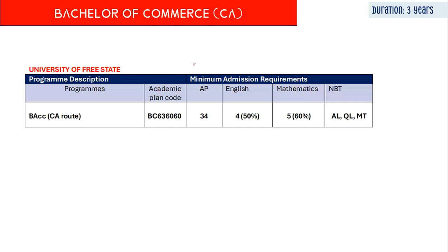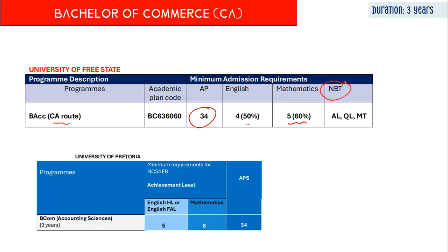The requirements for the CA route are slightly higher. At the University of the Free State, you need a code 5 for mathematics, an AP score of 34, a code 4 for English, and you'll need to write all your NBT tests. At the University of Pretoria, you do not need to write the NBT tests, but the maths requirements are higher — a code 6 for mathematics, an AP score of 34, and a code 5 for English.